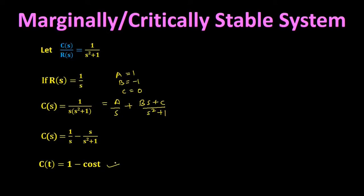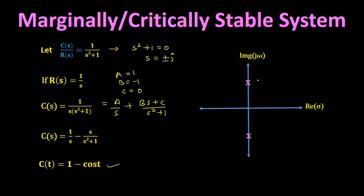This gives sustained or undamped oscillations. Finding the poles by equating the denominator s² + 1 = 0, we get s = ±j. On the s-plane, poles lie at +j and −j on the imaginary axis. Since all poles of this transfer function lie on the imaginary axis, this is an example of a marginally stable system.